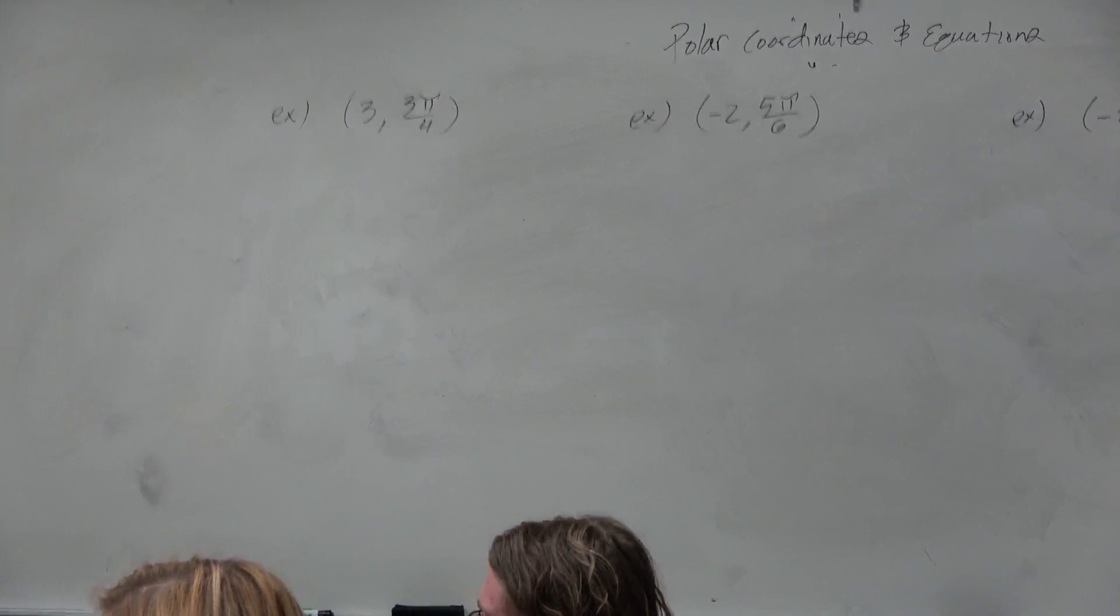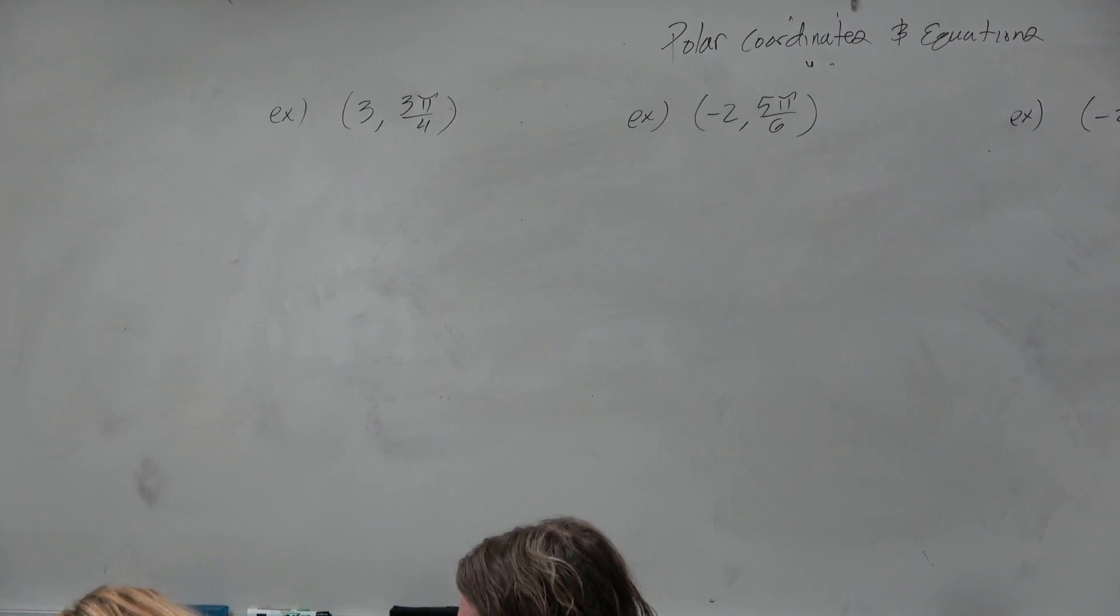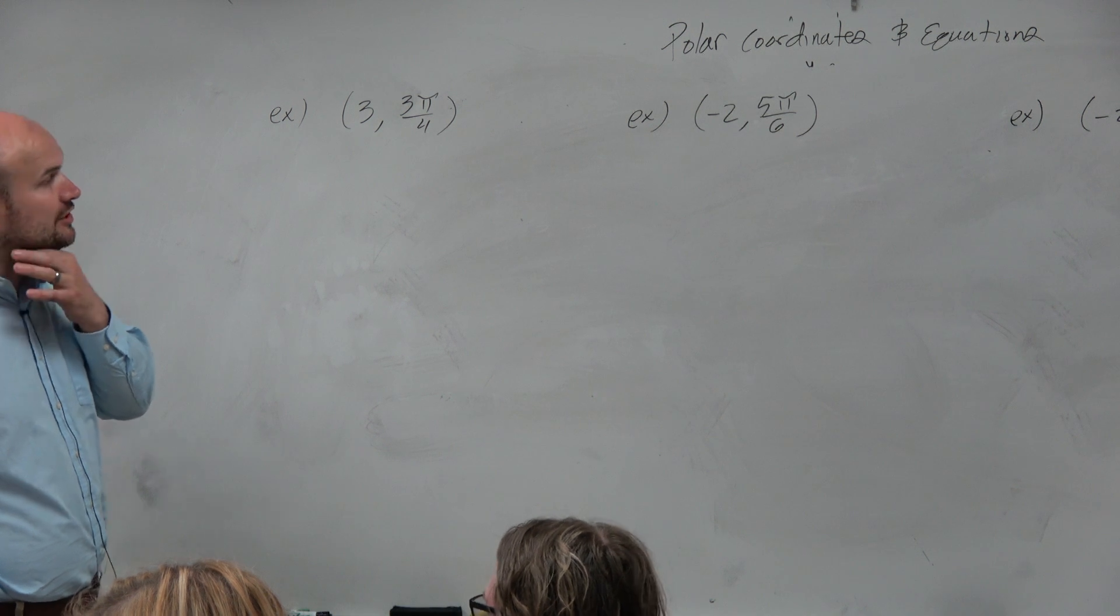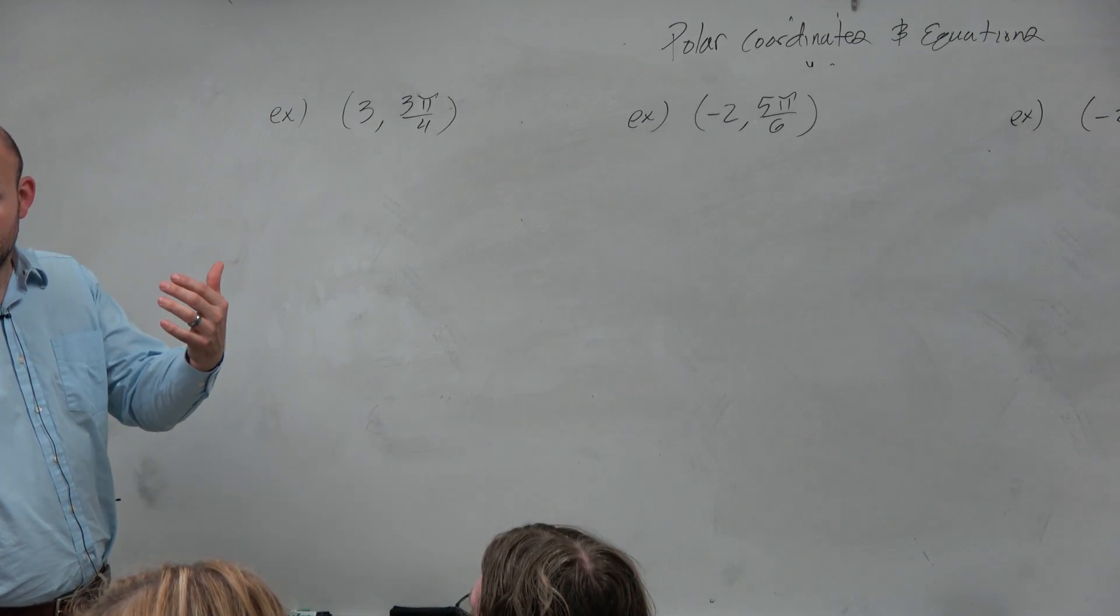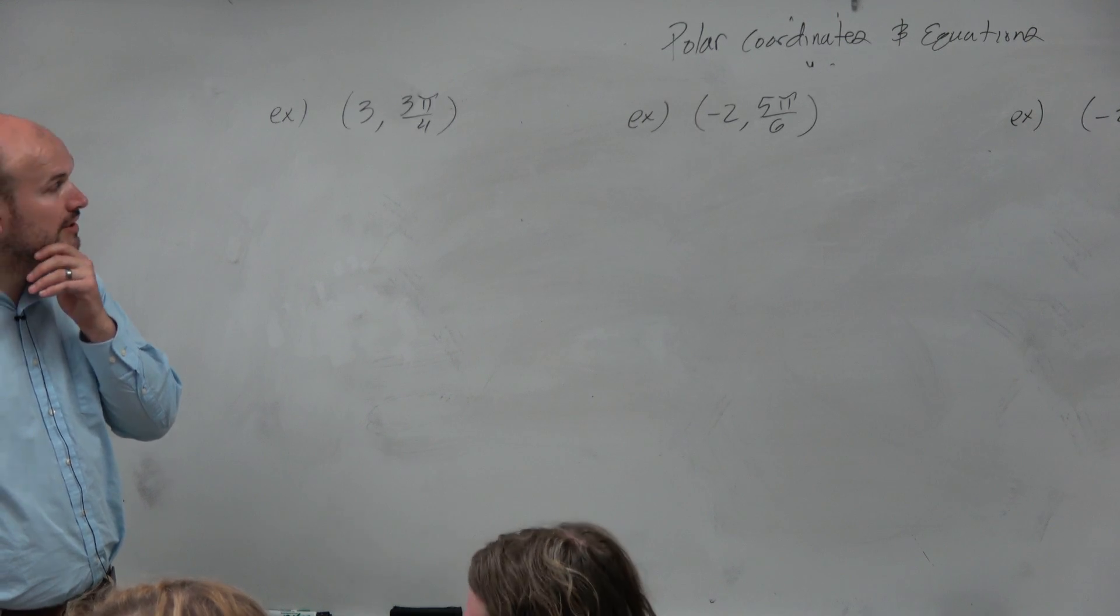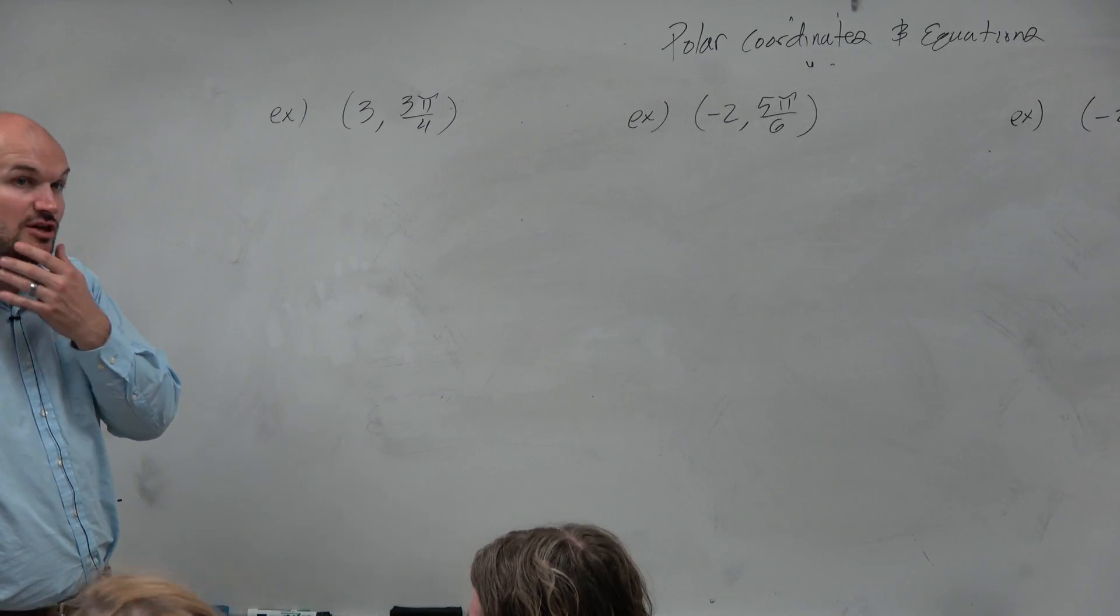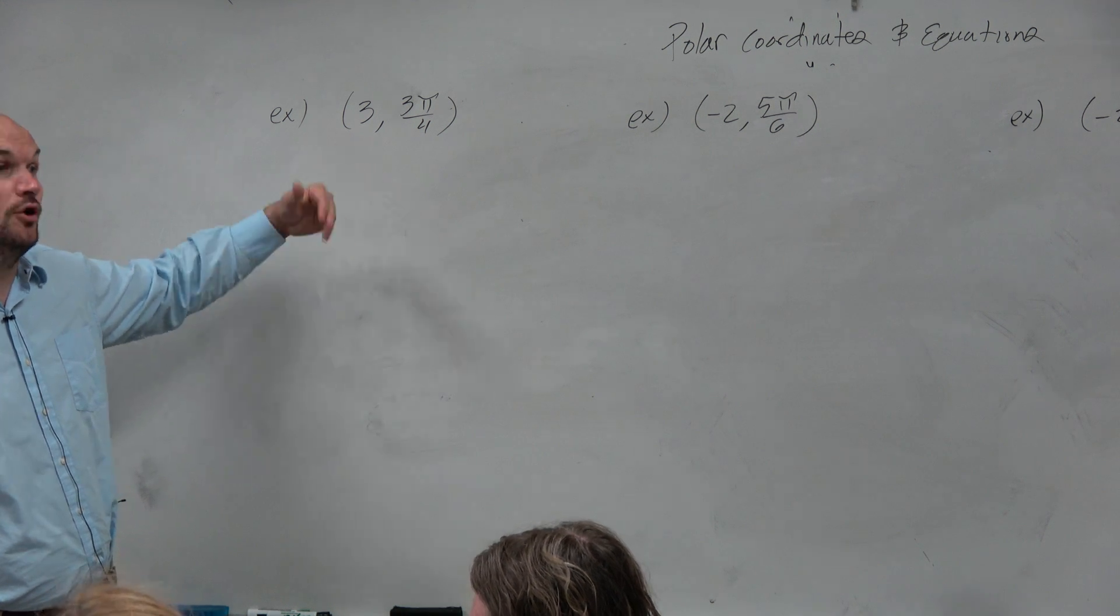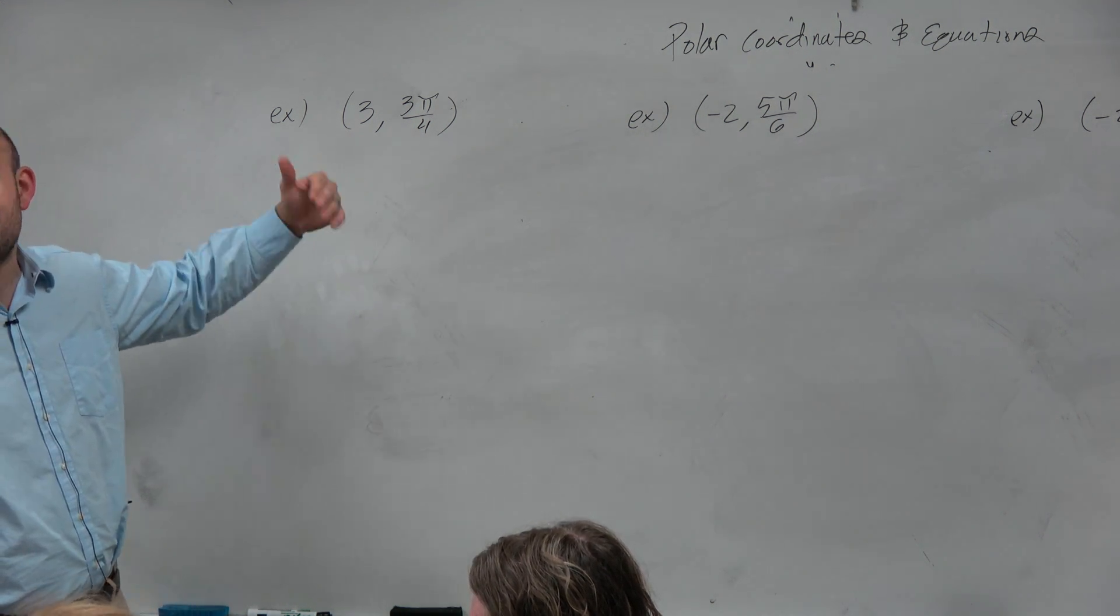All right. So let's go and take a look at 3, 3 pi over 4. So all I'm looking into doing, one question might be to convert this into rectangular form. And then another question I might ask you is determine what is another point that is equivalent to that. Or I might give you a whole bunch of points that are equivalent and say, which one is not equivalent?